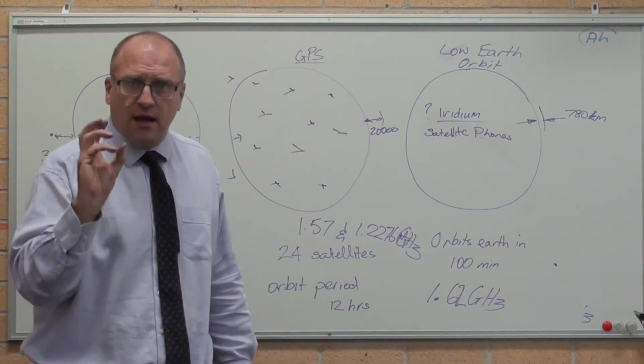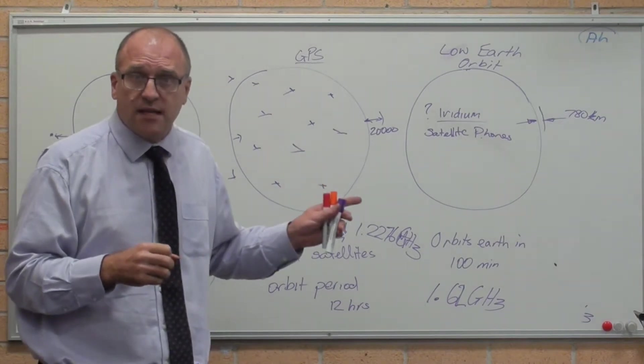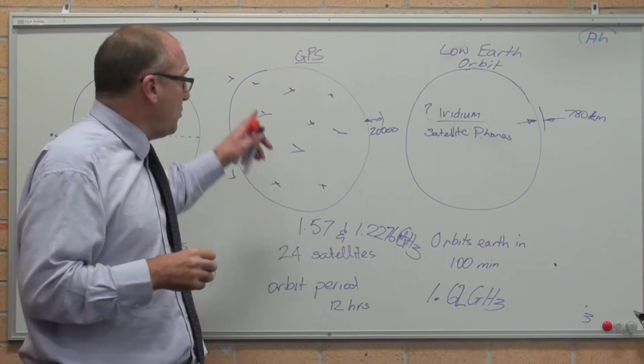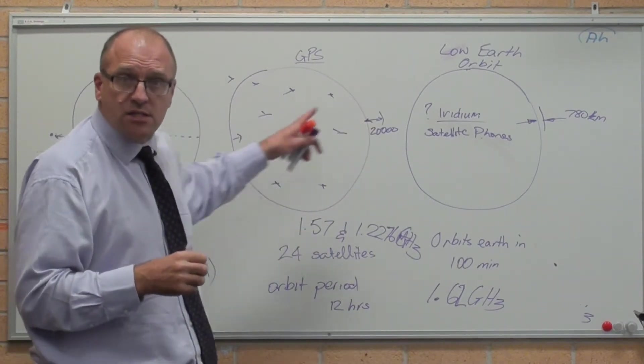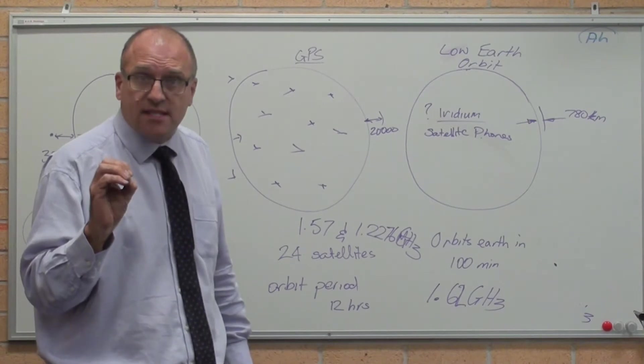They know the speed. They know the position. The satellites, when they're launched, have a highly stable, highly accurate atomic clock in them. So every one of those 24 satellites has got exactly the time, down to the nanosecond.